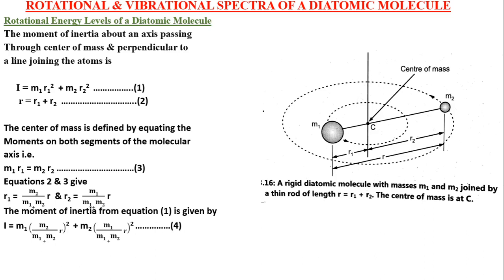Consider a linear rigid diatomic molecule shown in this figure. The two masses rotate about the axis that passes through C, the center of mass, and perpendicular to the bond length R. The rotation with respect to the bond axis is possible only for classical objects with large masses. For quantum objects, rotations with respect to the molecular axis do not correspond to any change in the molecule, as the new configuration is indistinguishable from the old one.